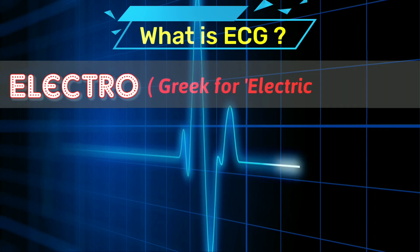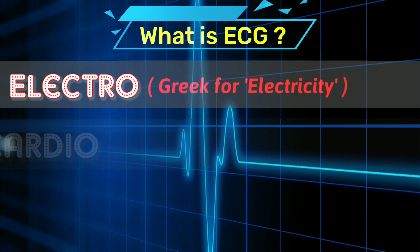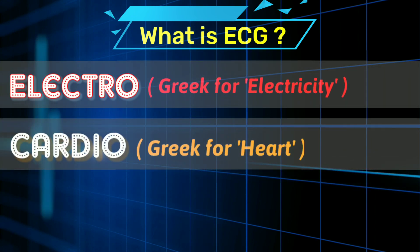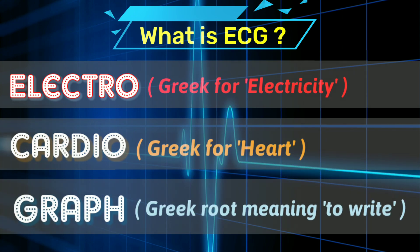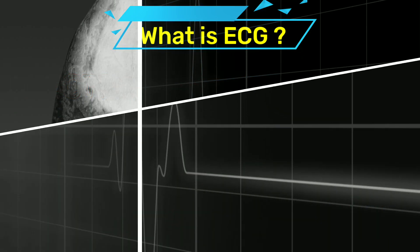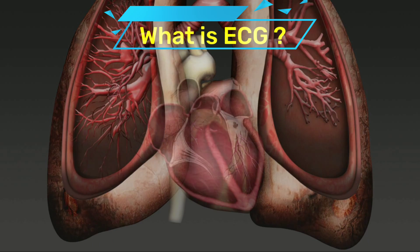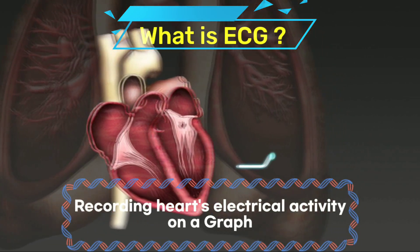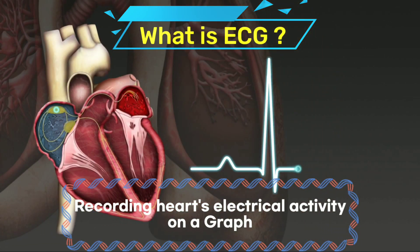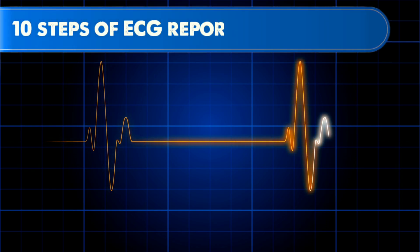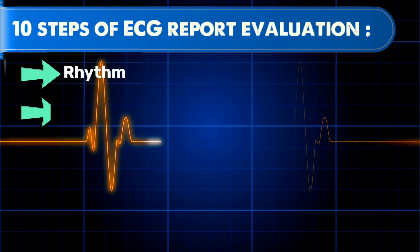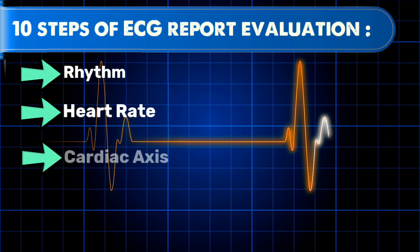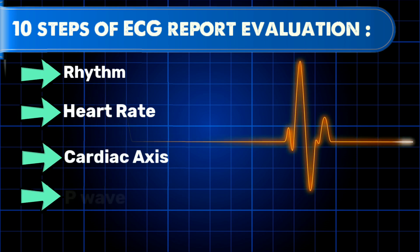Electro in Greek means electricity, cardio stands for heart, while graph is derived from a Greek root which means to write. Hence, ECG can be defined as recording of heart's electrical activity on a graph paper. In this series, we will learn all the important things regarding an ECG, which would help in quick and correct interpretation of any ECG report.